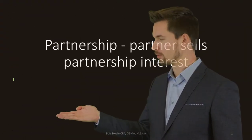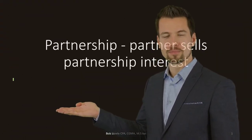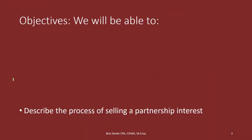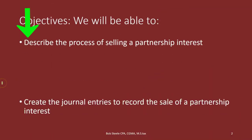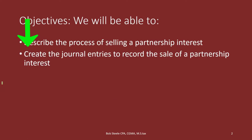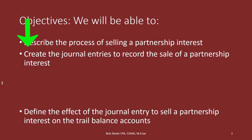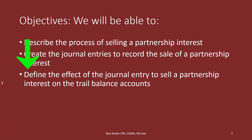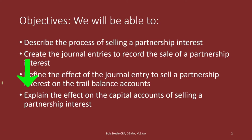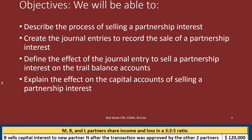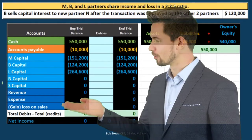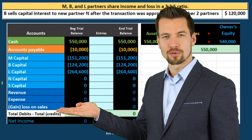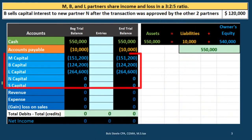In this lecture we're going to talk about partnerships and the selling of a partnership interest. We will be able to describe the process of selling a partnership interest, create the journal entry to record the sale, define the effect of that journal entry on the trial balance accounts, and explain the effect on the capital accounts. We'll do this by looking at a problem, posting the transaction, and seeing what happens to the capital accounts in both a trial balance and worksheet format.